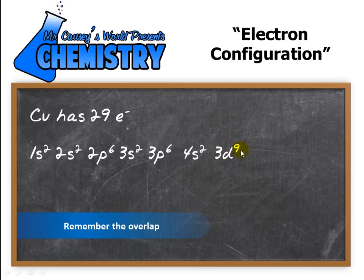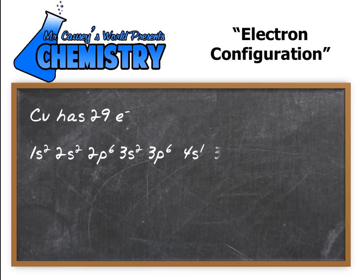Now this is what most people would think is going to happen. But not only is there an overlap, we need to also remember that there's an electron jump. An electron jumps from 4s to 3d. And we actually are going to get 4s1, 3d10.